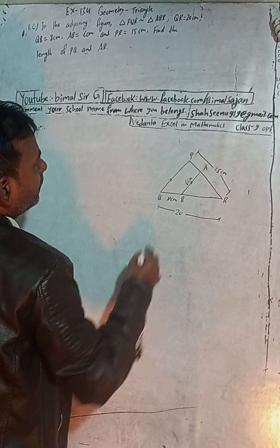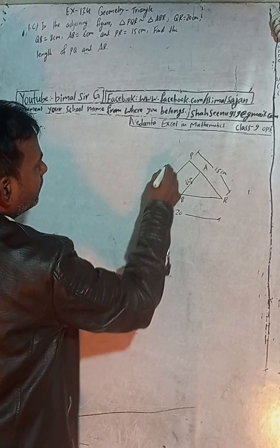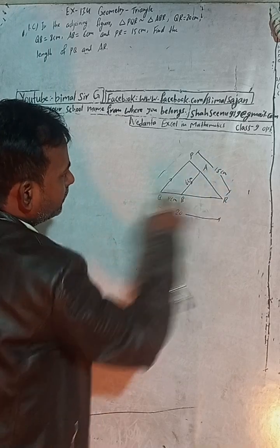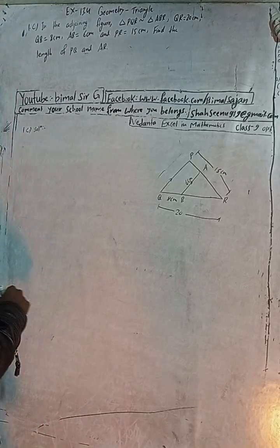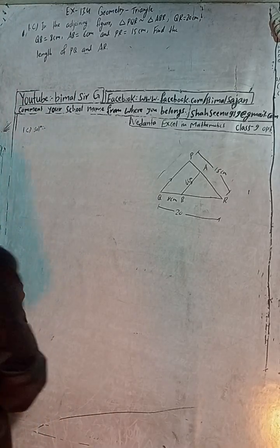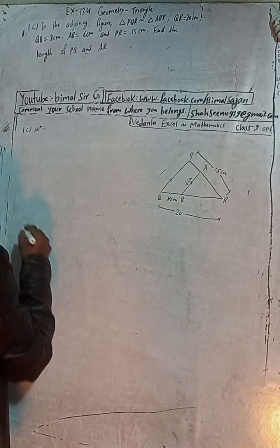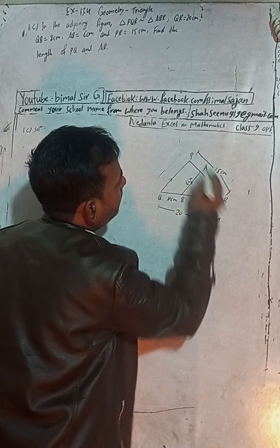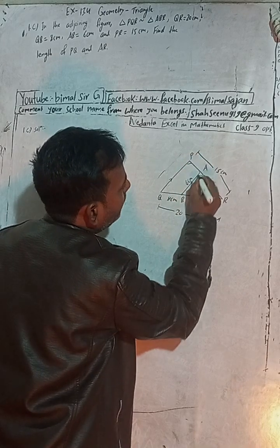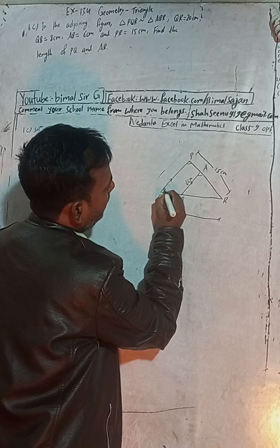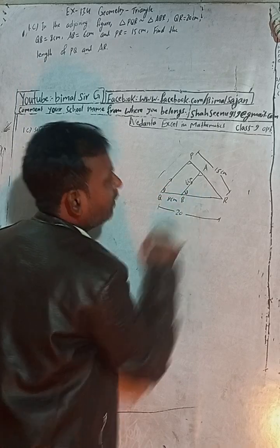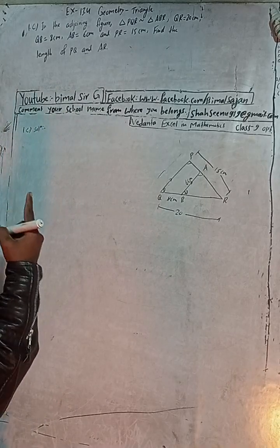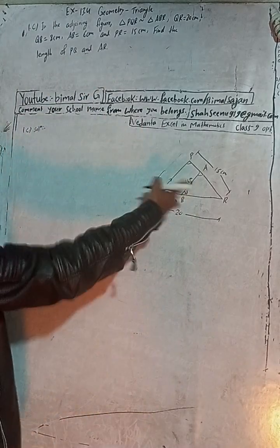So what technique will we apply here? Given that these are similar triangles, it is similar by parallel lines. In the bigger triangle, this angle corresponds to this angle, and this angle corresponds to this angle, and there is a common angle.